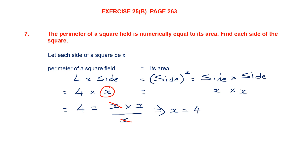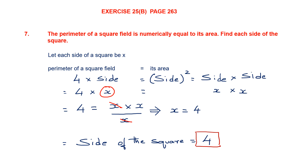And x, we said, is the side of the square. So the answer is side of the square is equal to 4 units. Since units are not given, we just write it as 4. So the answer to question 7 is 4.